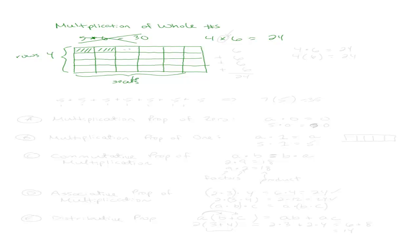What's really happening is you have 6 seats in the first row, 6 seats in the second row, 6 seats in the third row, and 6 seats in the fourth row, for a total of 24 seats. So we're getting that multiplication is the same thing as repeated addition. This is how multiplication relates to addition.